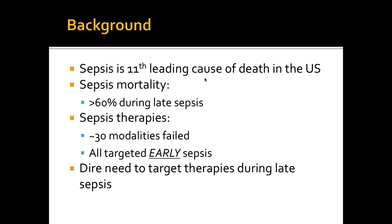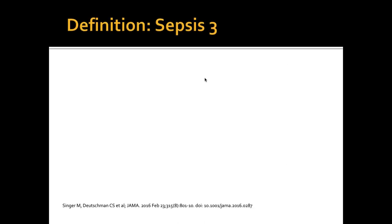Sepsis, at least here in the United States, is the 11th leading cause of death in the ICUs. More importantly, it is the number one cause of death in the non-coronary intensive care units. Sepsis mortality — more than 60% of patients die during late sepsis. Whereas over 30 different modalities and $30 billion have been spent studying different specific therapies in sepsis, all targeting early sepsis. So no wonder we've never been able to change the course of sepsis. We are in dire need of targeted therapies.